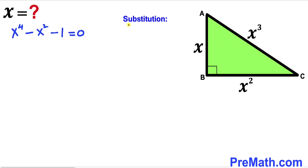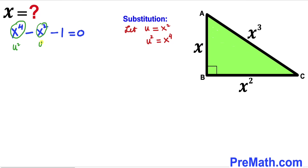To simplify, we make a substitution: let u equal x squared. Then u squared equals x to the fourth. Substituting into the equation, x to the fourth becomes u squared and x squared becomes u, so our equation becomes u squared minus u minus 1 equals zero.